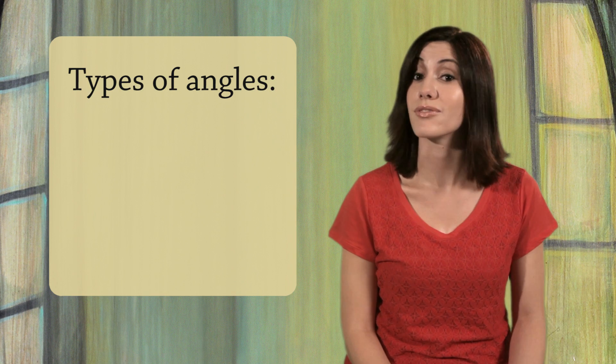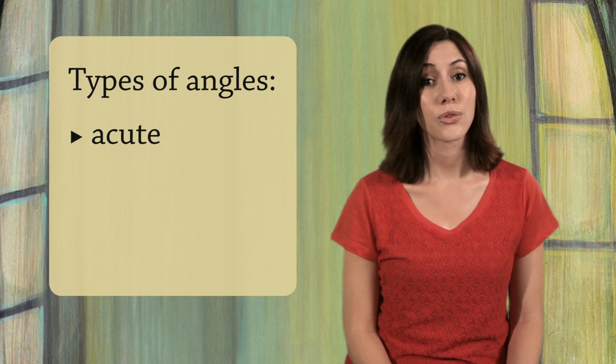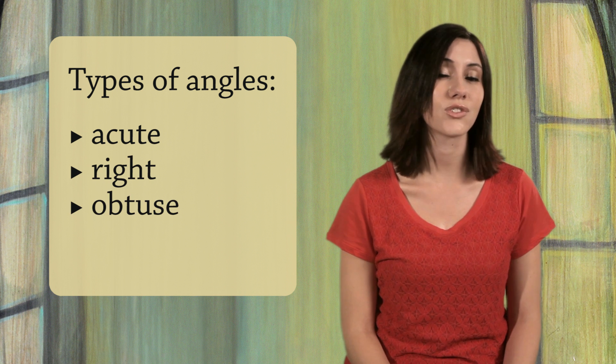When you first learn about angles, you learn four words about angles of different sizes: acute, right, obtuse, and straight angles.